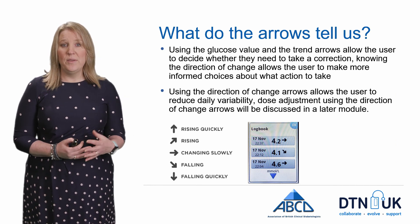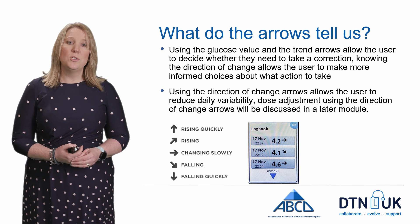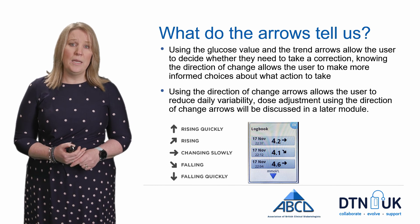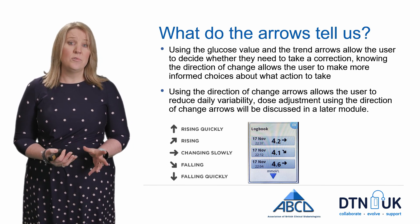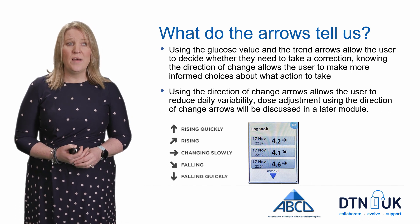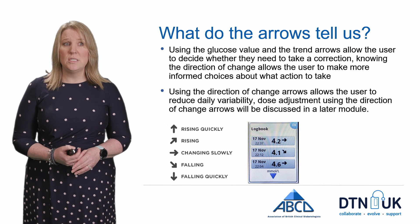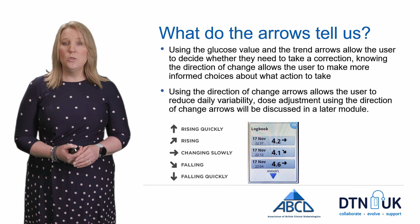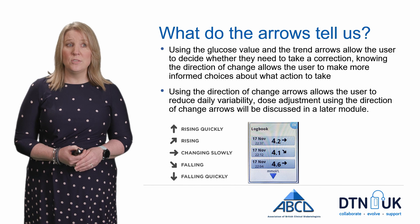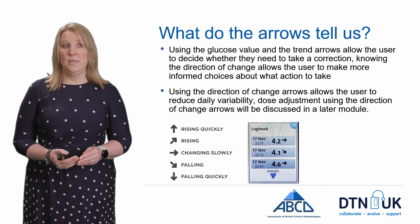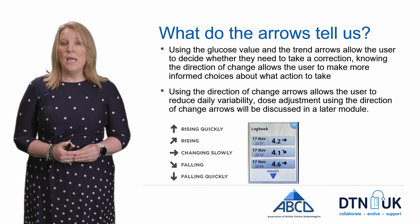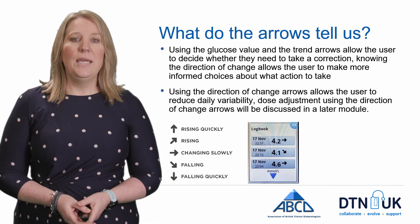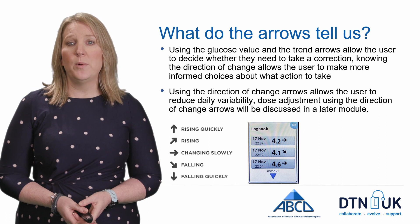So what do the arrows tell us? Now that we've looked at some of the graphs, we need to better understand what the arrows are telling us so we can make the right changes in insulin requirements, exercise, or food. Using the glucose value and trend arrows allows you to decide whether you need to take a correction and make informed choices about what action to take. Using the direction of change arrows allows you to reduce daily variability and make the right dose adjustment — dose adjustment for correction with arrows will be discussed in a later module.